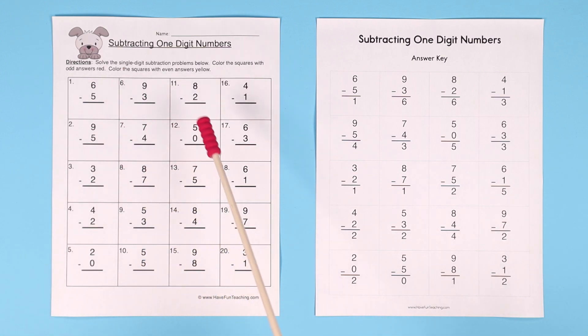Color the squares with even answers yellow. So, if it's an even number for the answer, color it yellow. I guess 0 can be included as an even number, 2, 4, 6, 8.